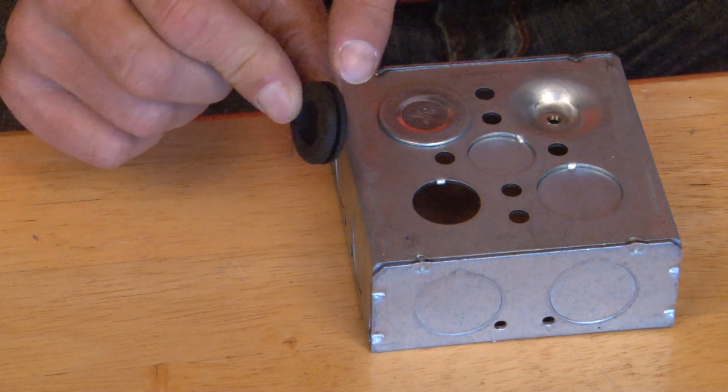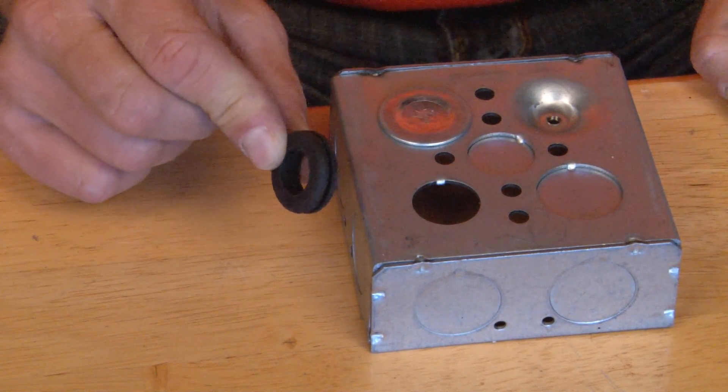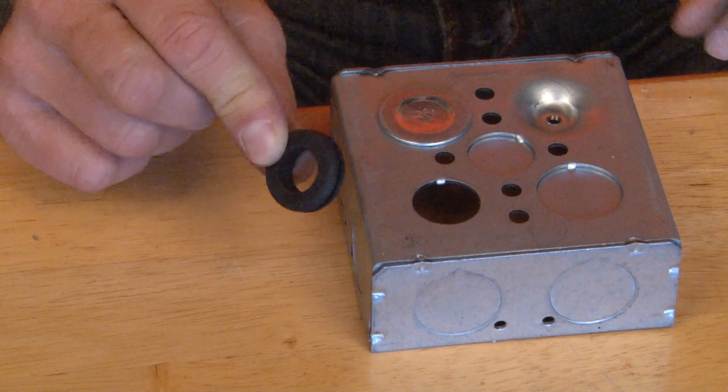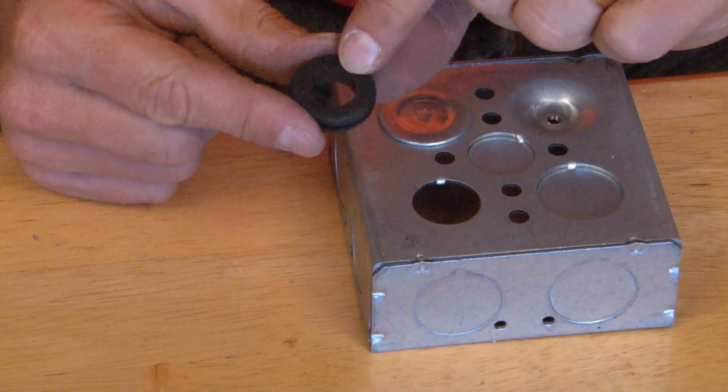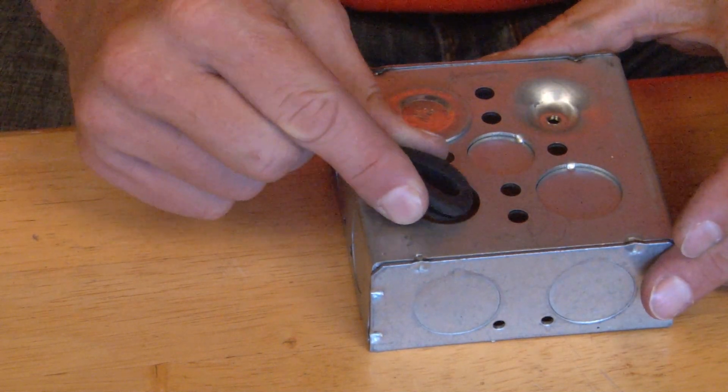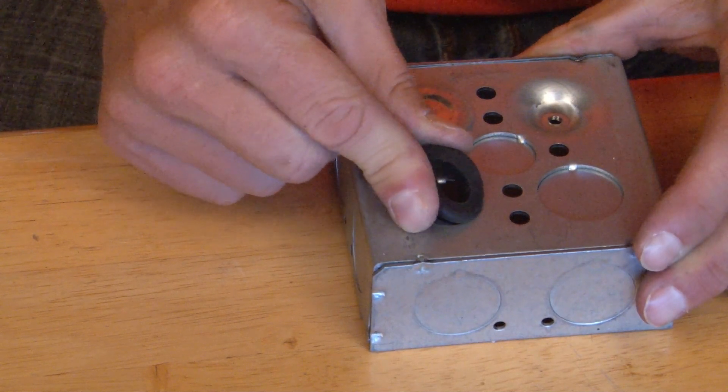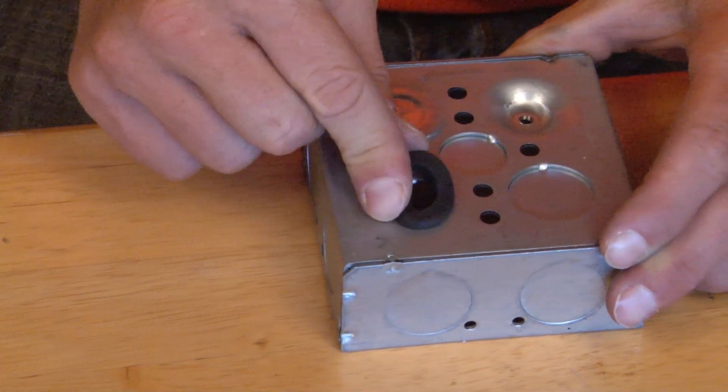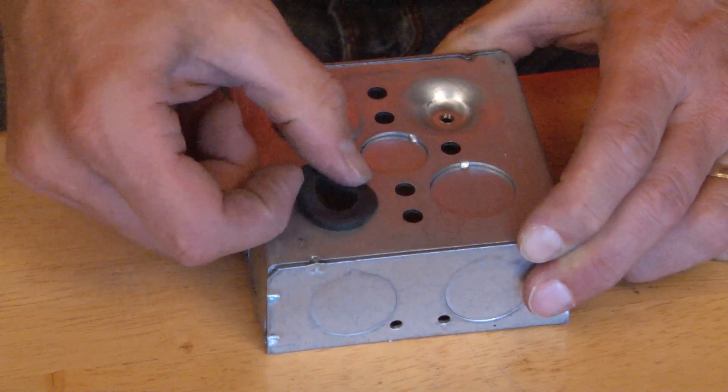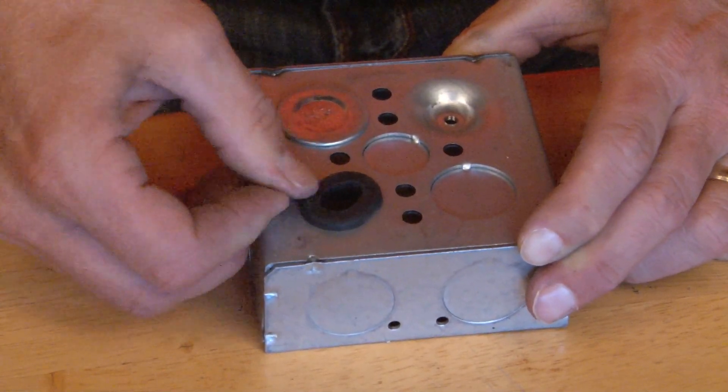This grommet is slotted to the thickness of the steel and can install quickly and easily. You simply compress it and attach the slot to the edge and slowly work it around onto the knockout opening.